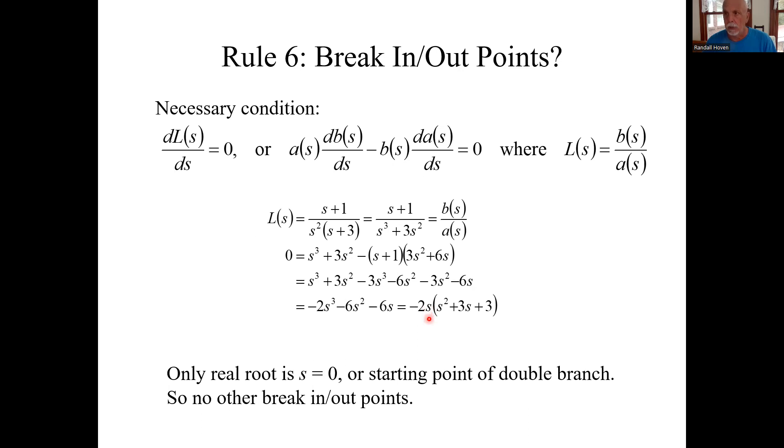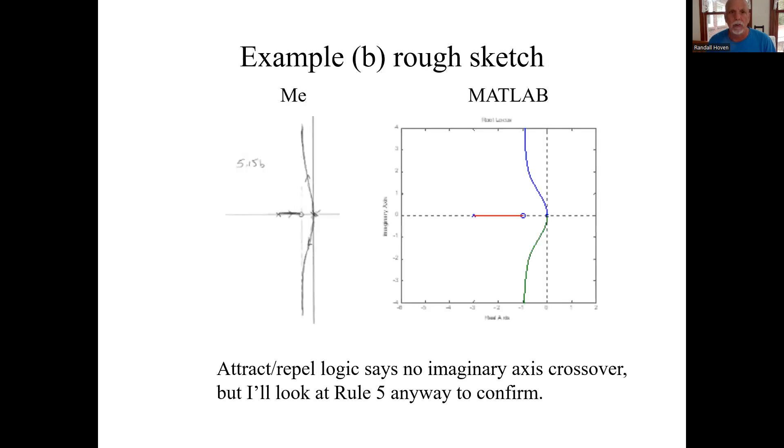This S, that's one root. S equals zero. That's one root. That's just where the double pole is. We know we're going to get break-out points there. The rest of this, this does not have real roots. You have to have real roots for this to work. So if there's no other real roots, there's no other break-in, break-out points. That would pretty much guarantee that these guys don't come back around and back into there. And we can go with this sketch.